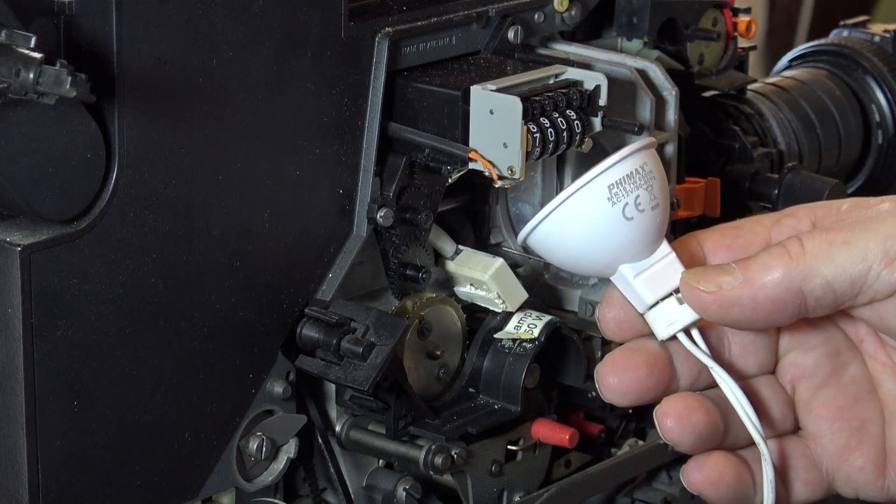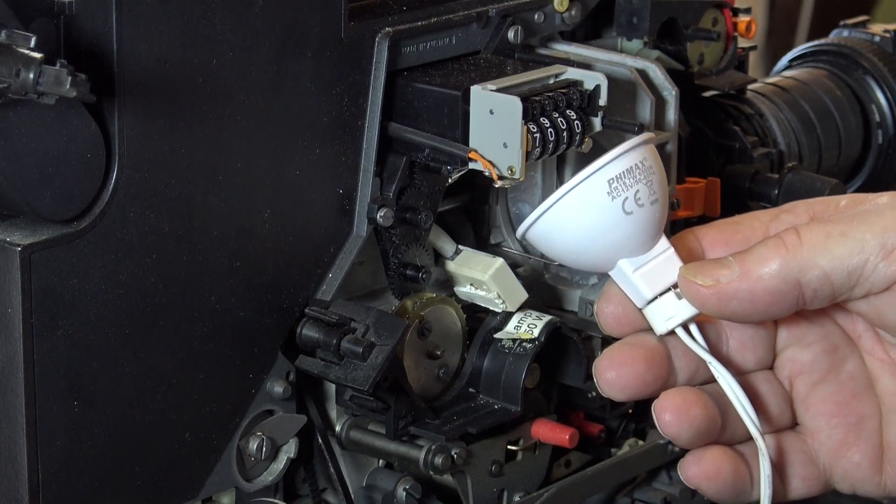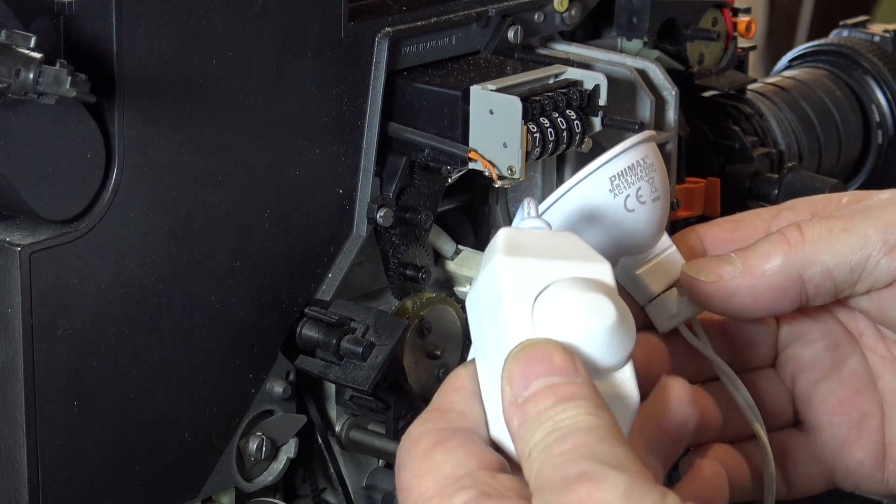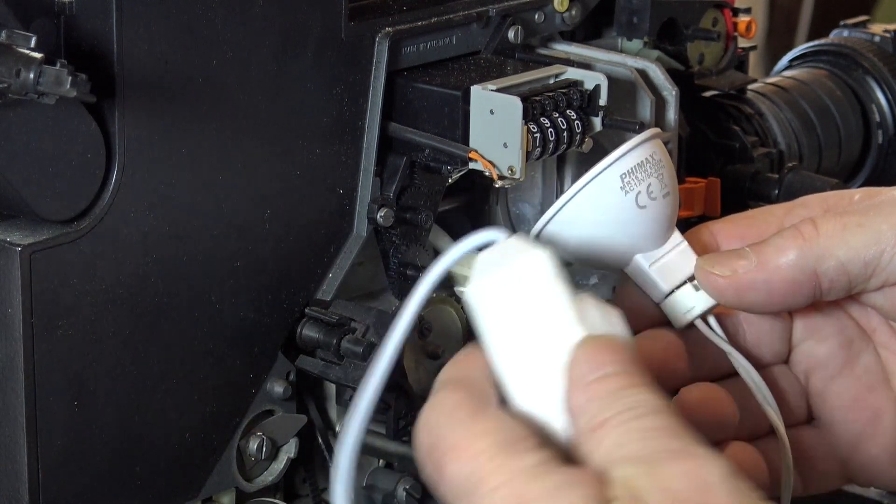This LED lamp, which you can get online, is 7 watt, 12 volt, and it also comes with a dimmer switch.